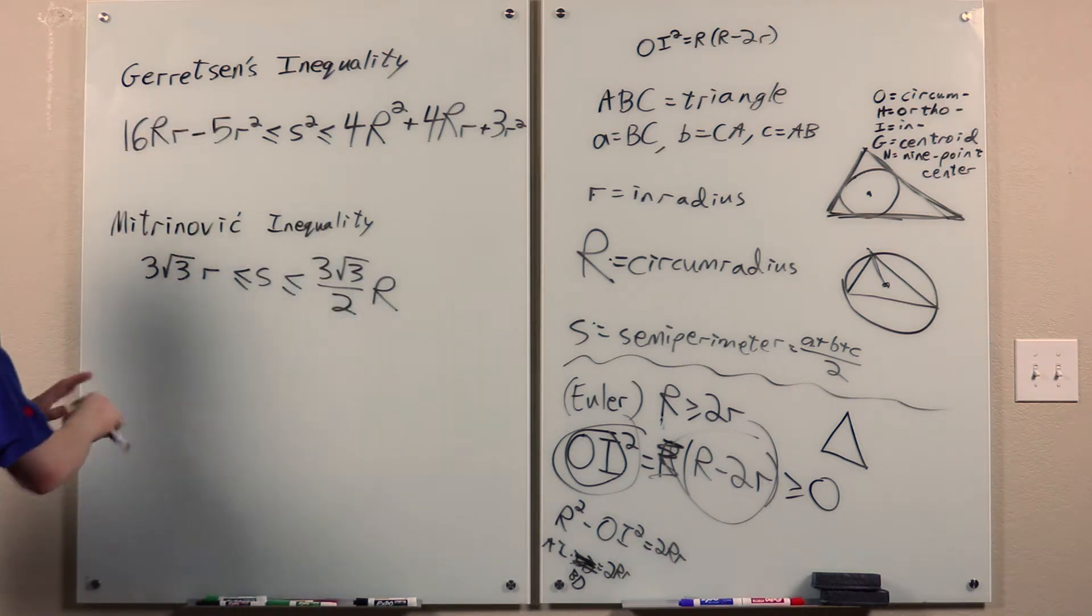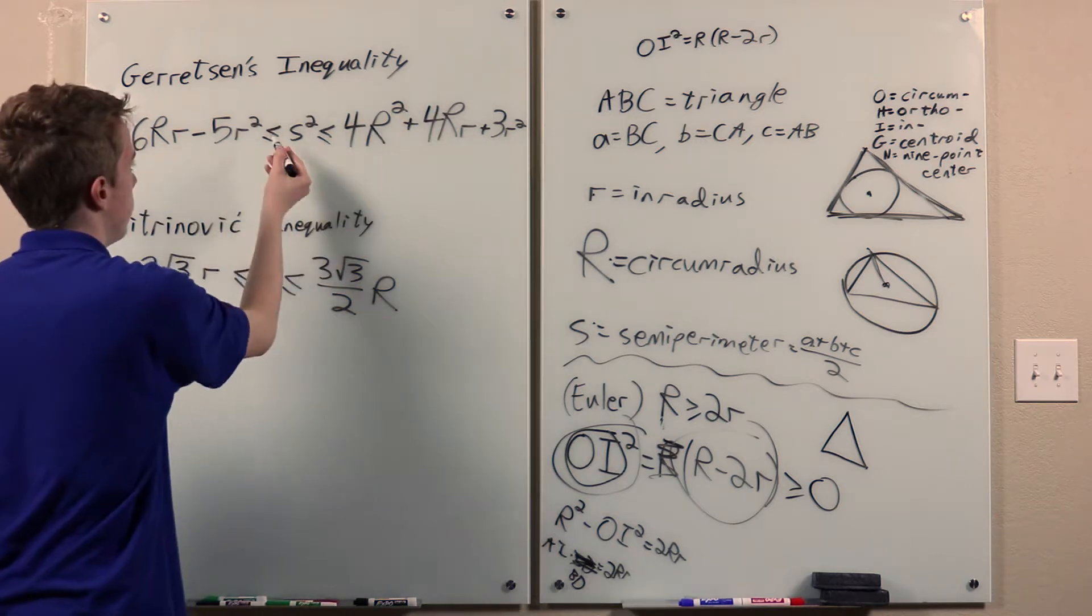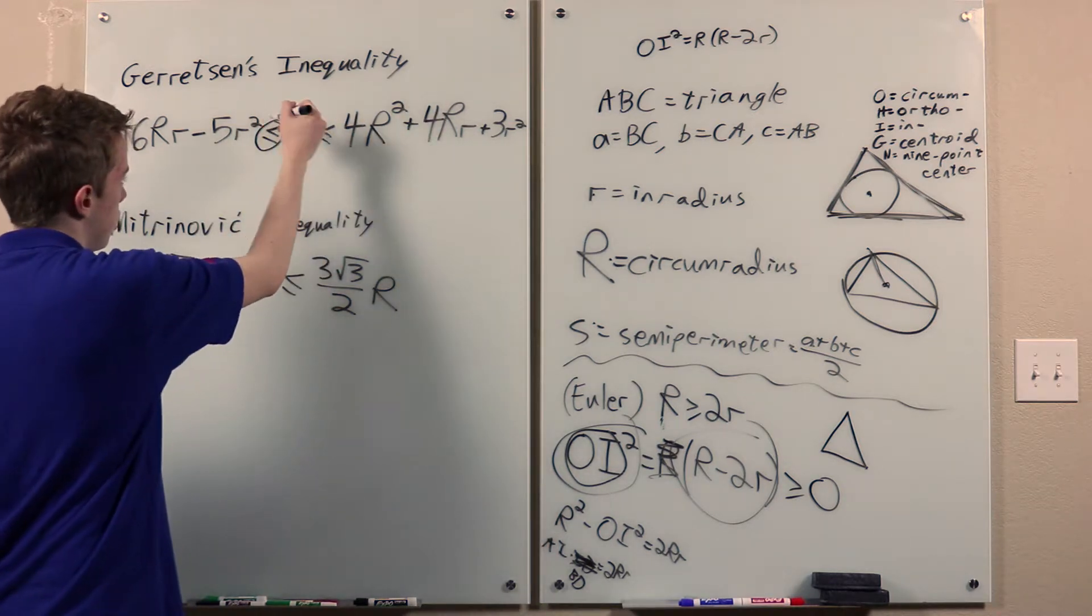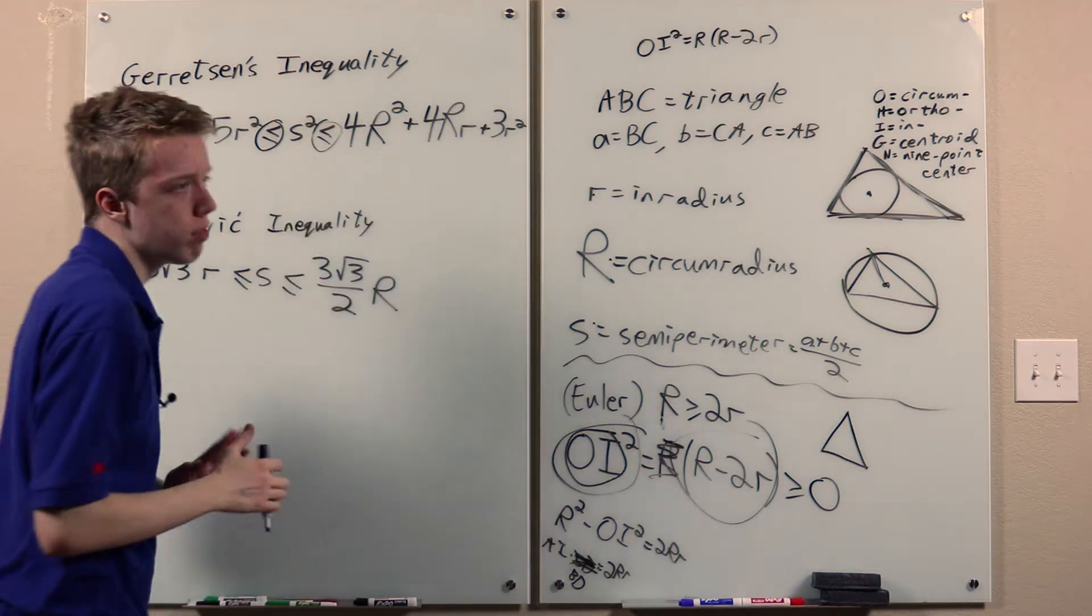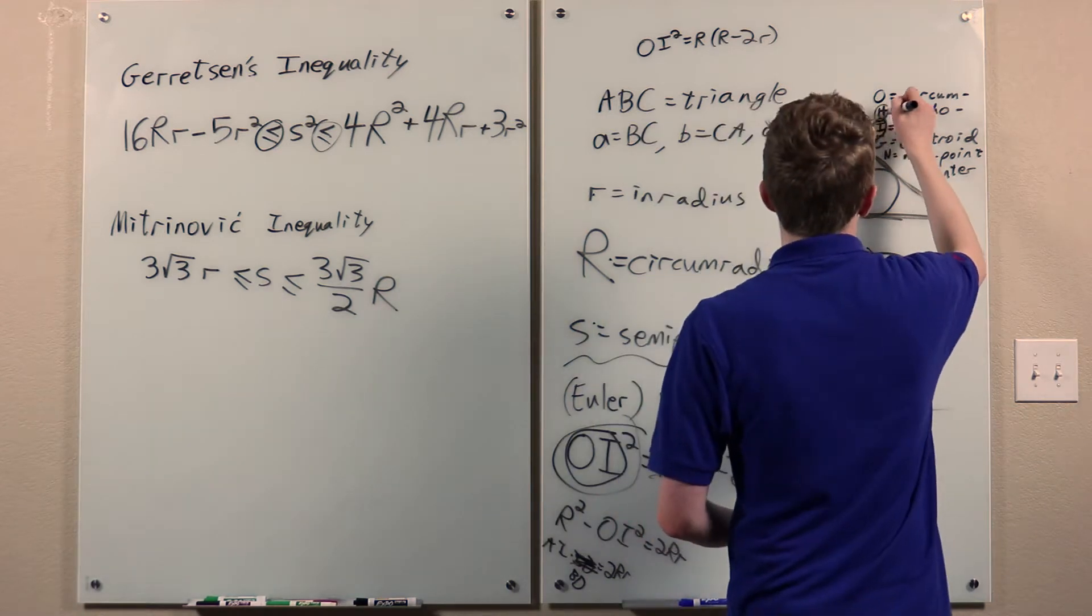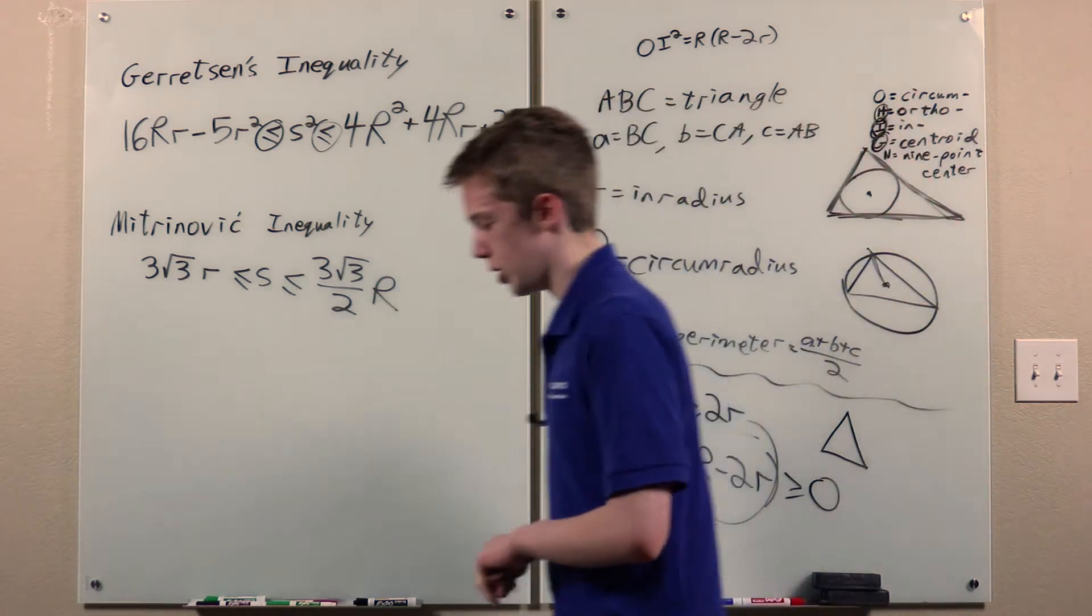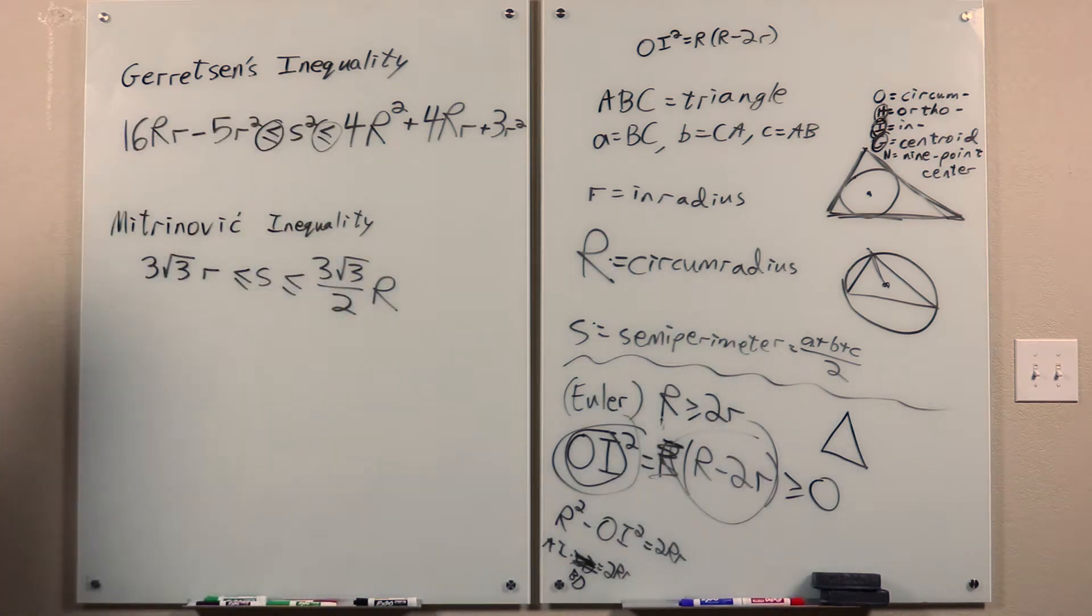Notice that those expressions for the lengths immediately also give us the equality case in this, which is that either one has equality if and only if the triangle is equilateral. As it can be checked that for I and H to coincide, the triangle must be equilateral, and for I and G to coincide, the triangle must be equilateral.